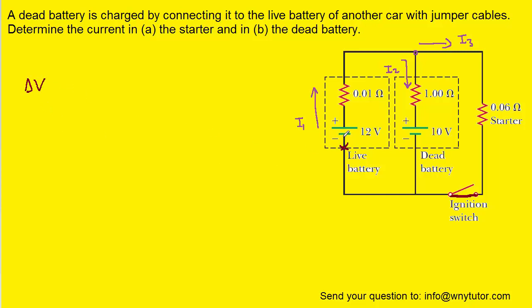Now, the first potential change we encounter is crossing this battery from the negative to the positive terminal. And whenever we move from the negative to the positive terminal of a battery, that is a positive potential change. So we would have positive 12 volts so far.